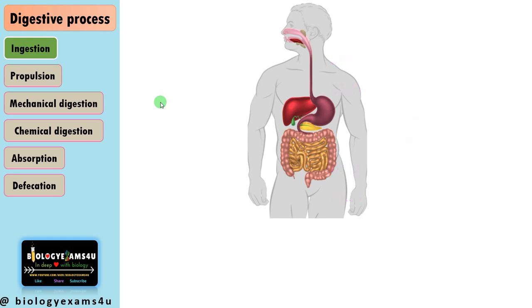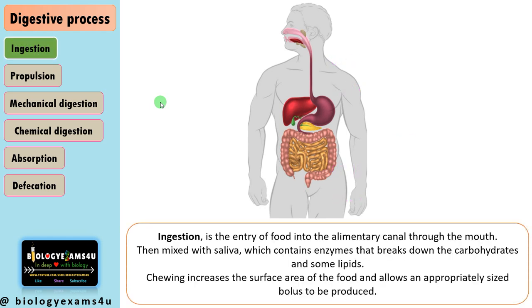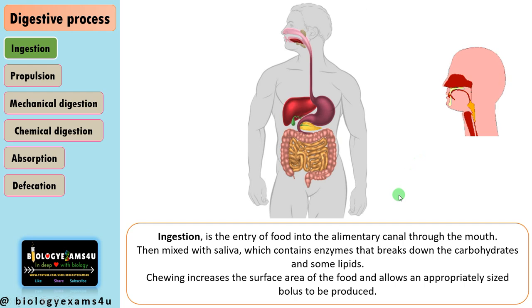First, ingestion: the entry of food into the alimentary canal through the mouth. The food mixes with saliva, which contains enzymes like salivary amylase that breaks down carbohydrates and lingual lipase that breaks down some lipids. Chewing increases the surface area so enzymes can act more effectively, finally producing an appropriately sized bolus that is pushed into the esophagus.